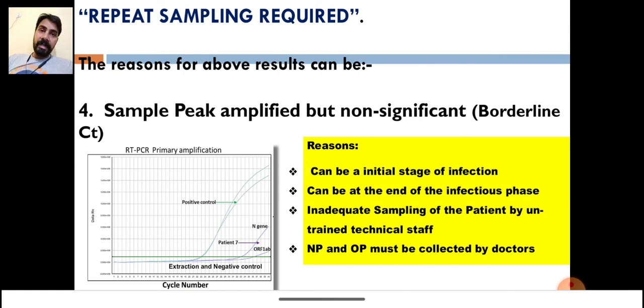We have to give by default repeat sampling required. In any of these four reasons, if in future you get the result from any COVID lab as repeat sampling required, then without wasting much time, just go to the collection center again and give your fresh sample for COVID RT-PCR.